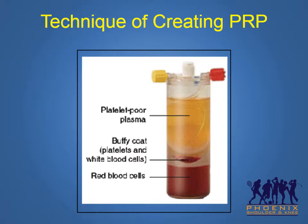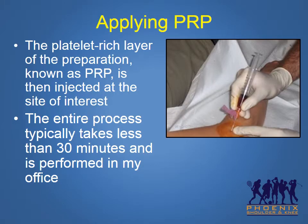The bottom layer contains red blood cells. The middle layer, enclosed within the green circle in the image, known as the buffy coat, is rich in platelets and is isolated to create the platelet-rich plasma. The platelet-rich layer of the preparation, known as PRP, is then injected at the site of interest. The entire process typically takes less than 30 minutes and is performed in my office.